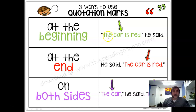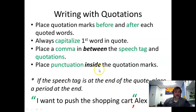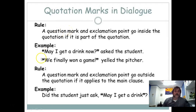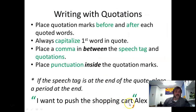Don't forget: you can have the quotes at the beginning, at the end, or they can even be split up. Notice the commas as we go along. Here, the quotation marks go around just what Alex said: 'I want to push the shopping cart,' Alex said — you have the quotation marks surrounding it and the comma that shows the end of the quotation. Also: 'Did the student just ask,' comma, 'may I get a drink?' You can see the comma there. The reason you don't have a comma after the closing quotation mark is because it ends with a question mark or exclamation point — then you don't need an extra comma. But if there's no exclamation point or question mark, then you do need the comma. That's the difference.